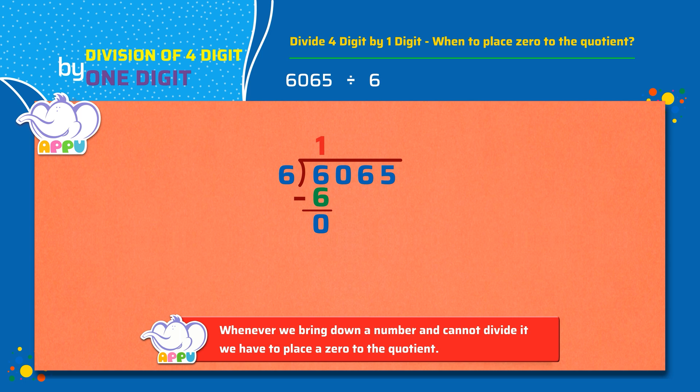Step 4: Next, we bring down the number in the hundreds place, which is 0. So the number now is 0. We cannot divide 0, so we write 0 to the quotient.